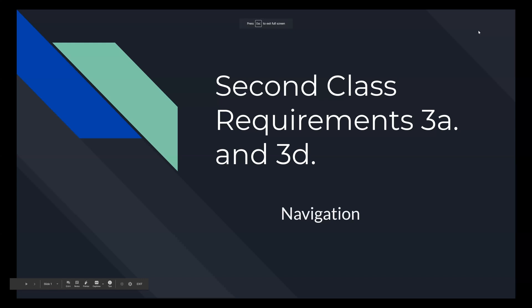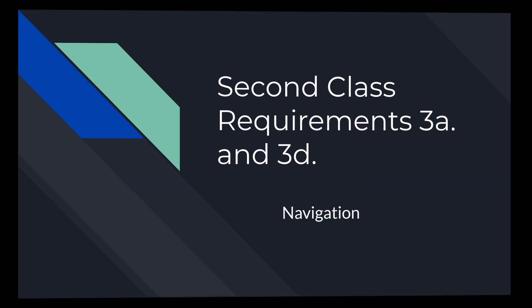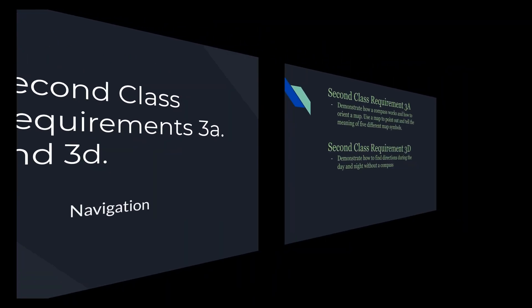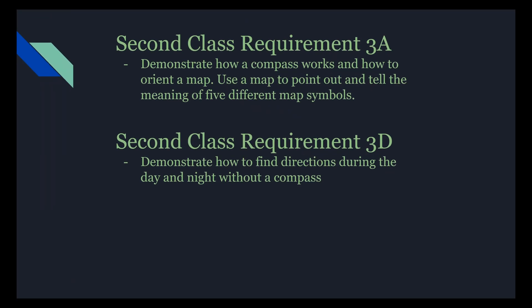Hello. Today I will be covering second class requirements 3A and 3D. Second class requirement 3A requires you to demonstrate how a compass works and how to orient a map, use a map to point out and tell the meaning of five different map symbols. Second class requirement 3D requires you to demonstrate how to find directions during the day and night without a compass.